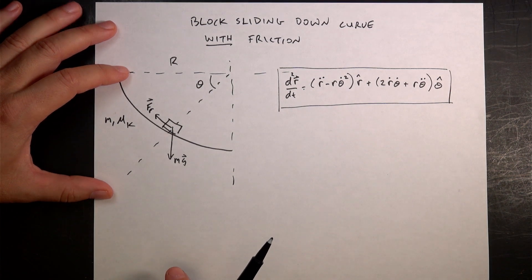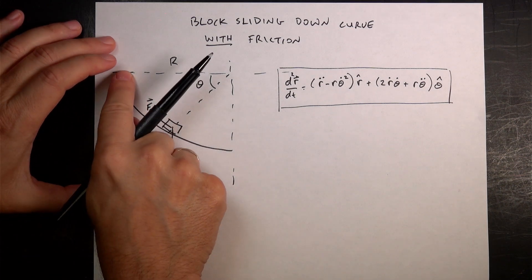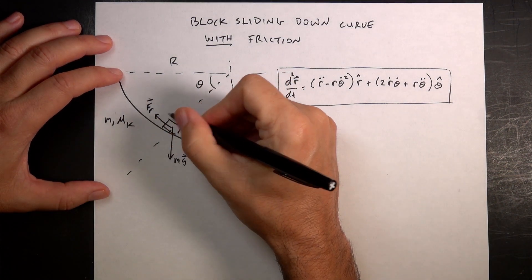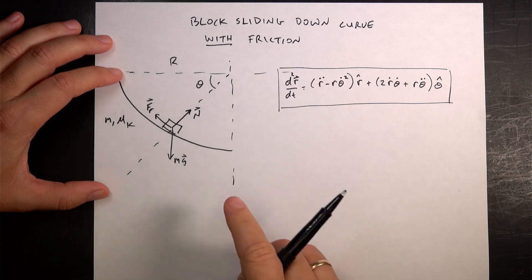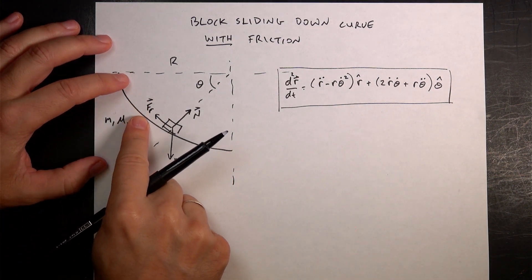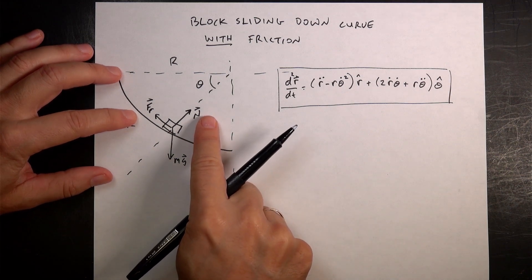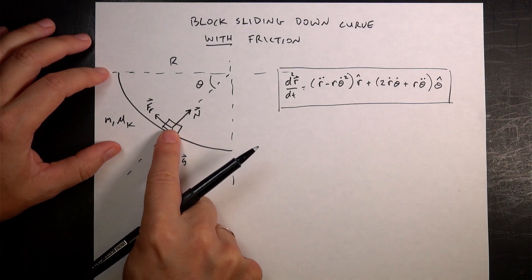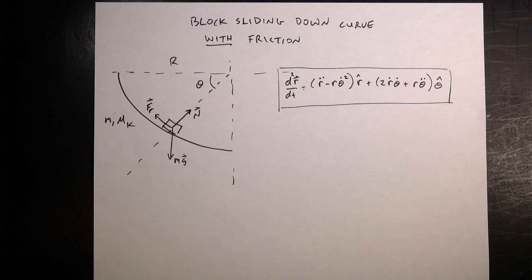You can see right here there are two problems with this friction force. Number one, the direction is not constant, because up here the friction force is straight up, and here the friction force is horizontal. And number two, it depends on the normal force. As the block slides down and increases in speed, it's going to move in a circle, and so this normal force is going to increase in magnitude too. So the frictional force depends on both the position, because of the angle, and also on the normal force and the speed. So it's not trivial.